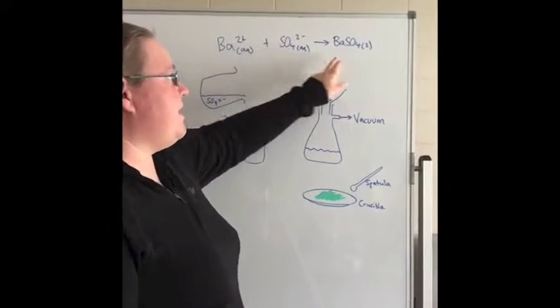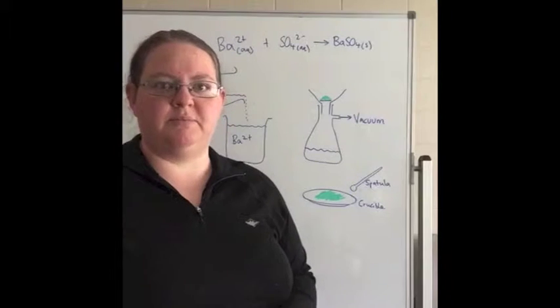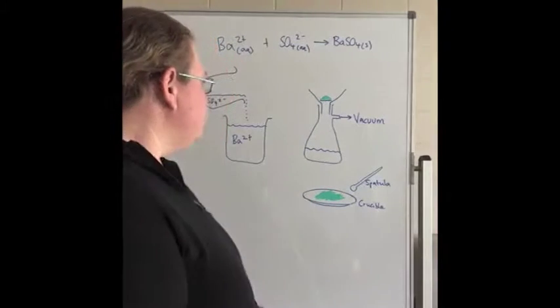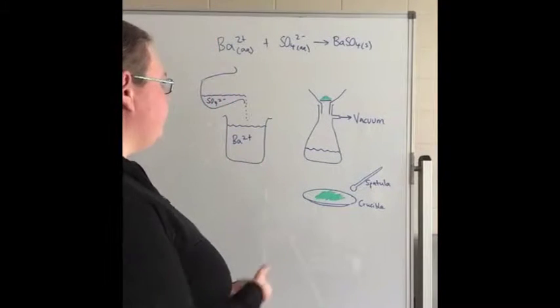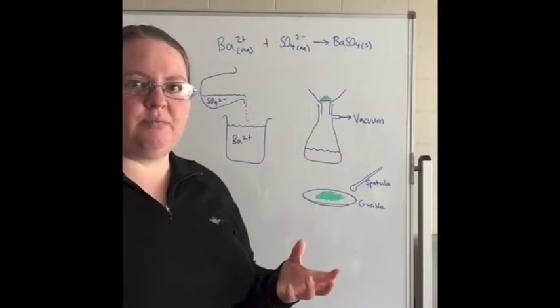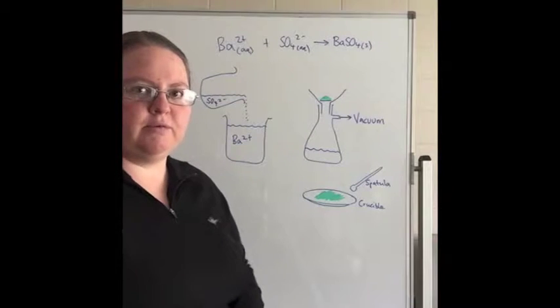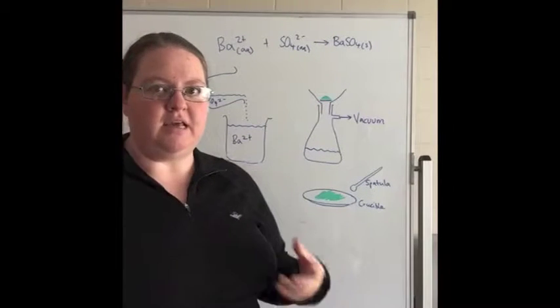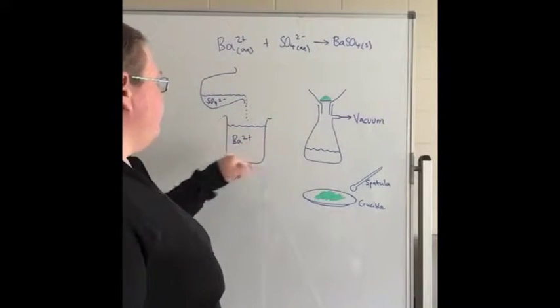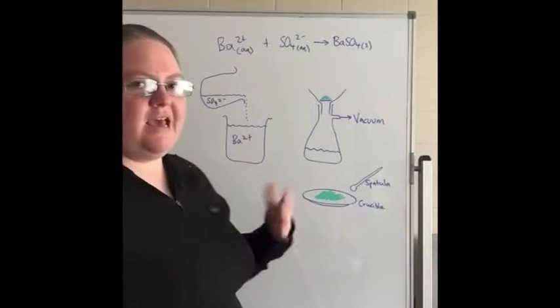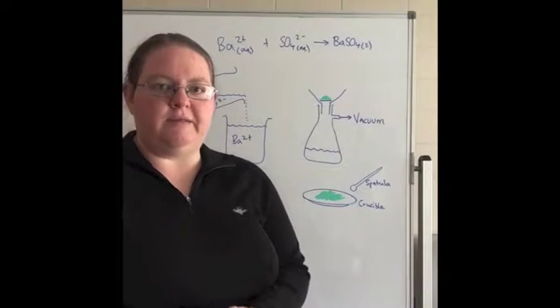Essentially, when we're doing our precipitation, this is our sampling here. So whatever our sample might be, we would actually have it in an aqueous solution. Then what we do is we pour in excess sulfate.